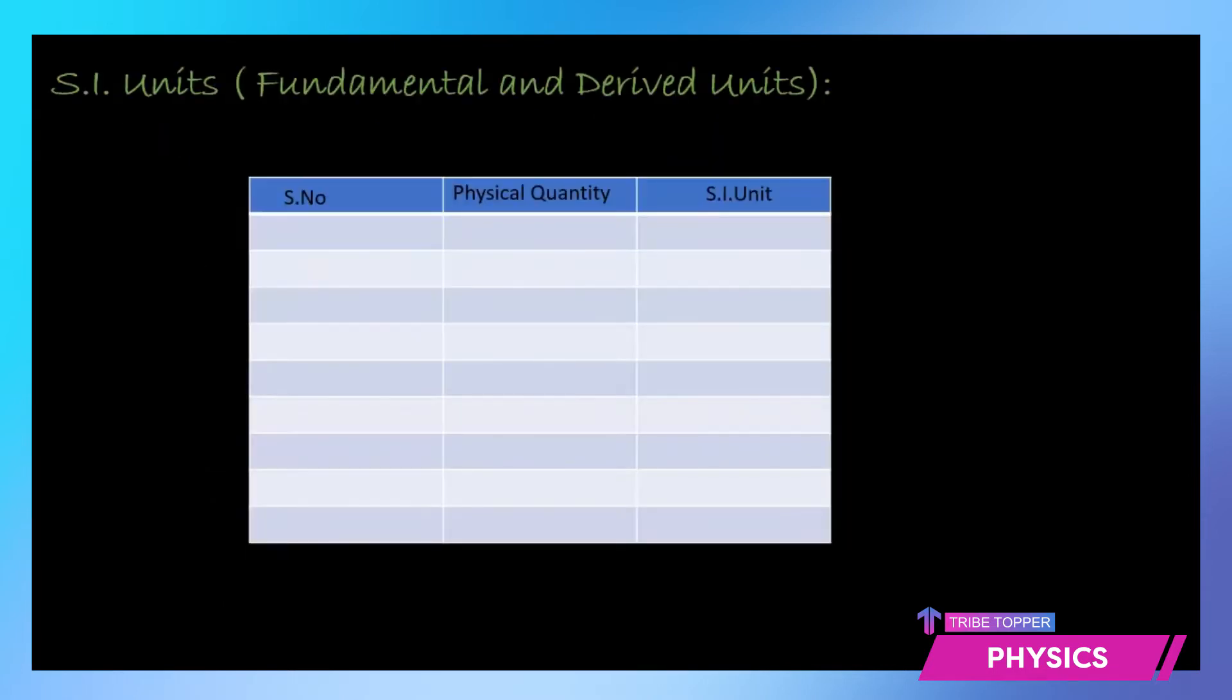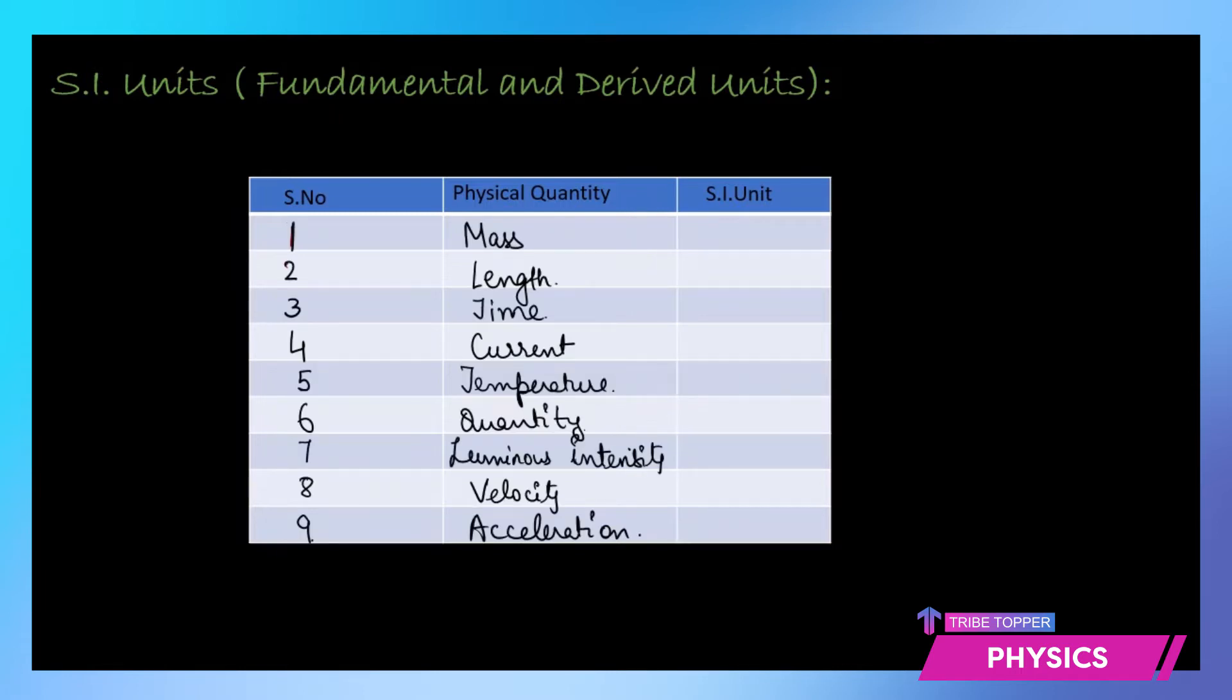So let's have a look at this. I'll just write down a few of the fundamental quantities and derived quantities and their standard units. So here we have the first seven fundamental physical quantities: mass, its SI unit is kilograms; length, its SI unit is meter; then is time, seconds; current, amperes; temperature, Kelvin; quantity is measured in moles; luminous intensity, candela; velocity, meters per second and acceleration, meter per second square. So you can see these are the fundamental and derived units.